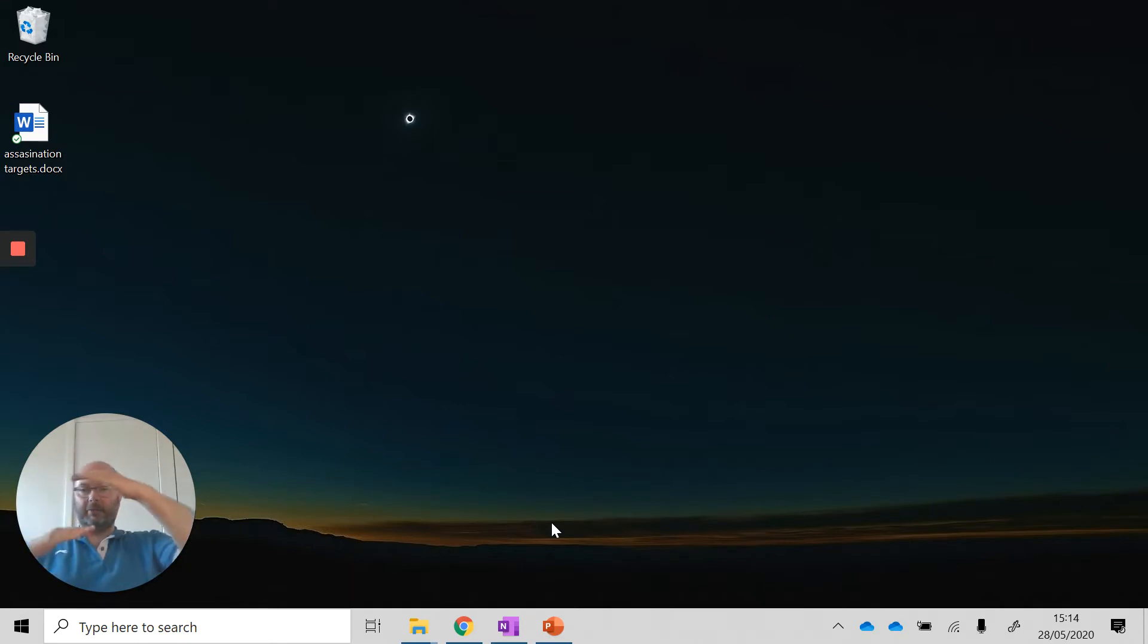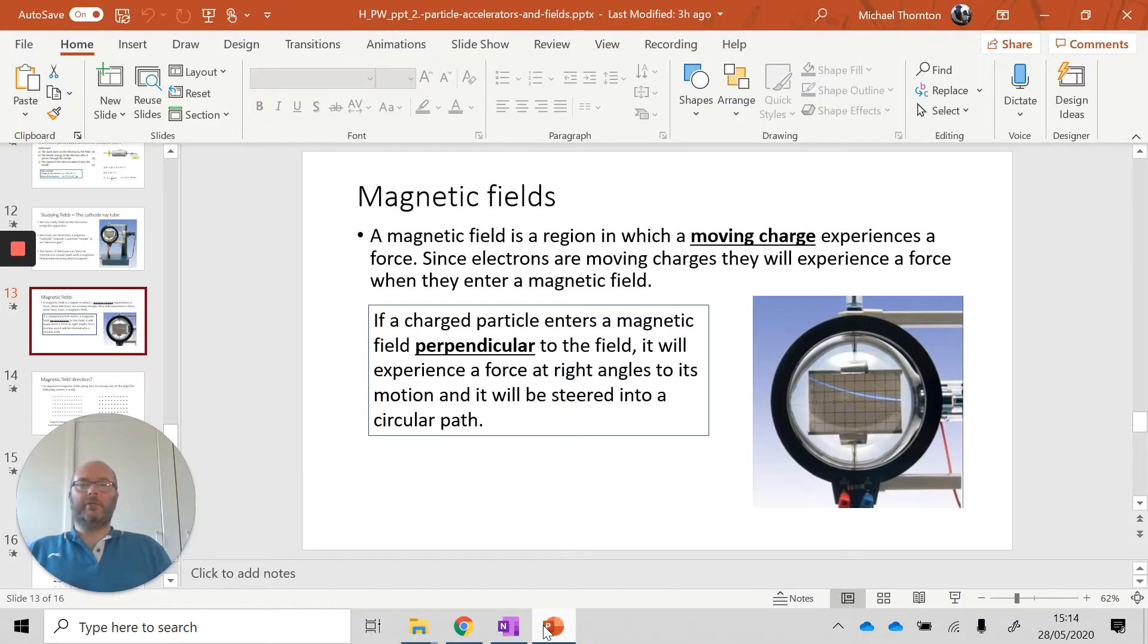Last week we looked at electric fields. We had parallel plates, you had an electric field between the parallel plates, and as a charged particle would move between those plates, that charged particle would be deflected by the electric field. Now we can look at doing something very similar with a magnetic field.